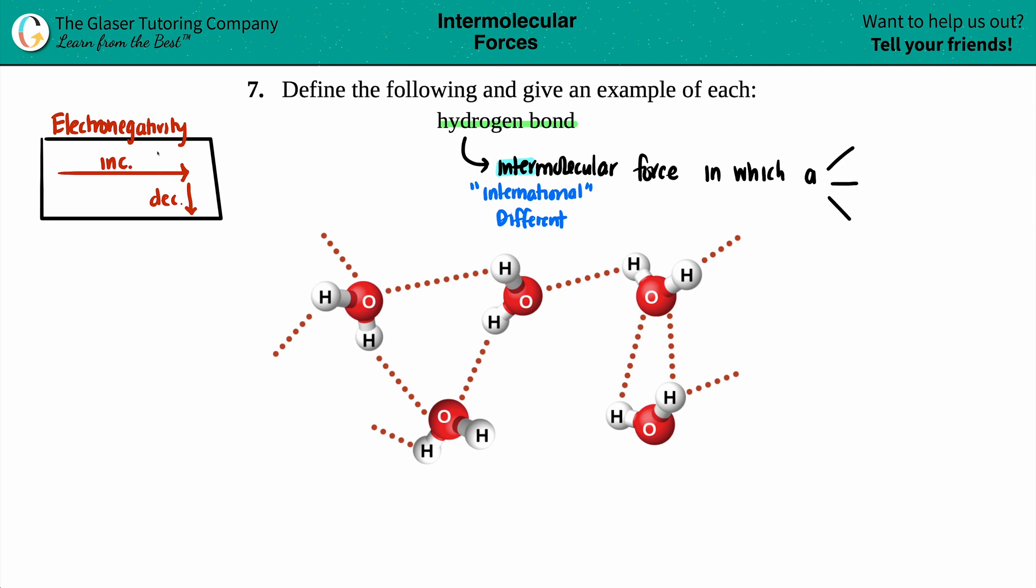Oxygen, actually, technically on the periodic table, it's nitrogen, oxygen, and fluorine. These are your three elements that the hydrogen can be bound with. So I'm looking at either a hydrogen that's either bound with a nitrogen, an oxygen, or a fluorine.